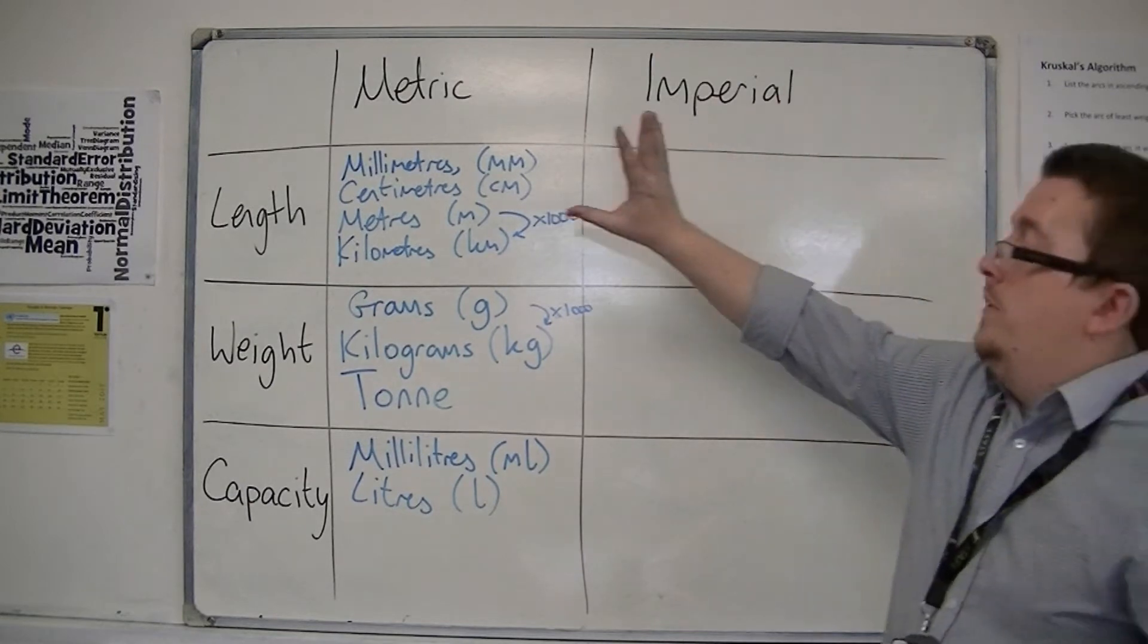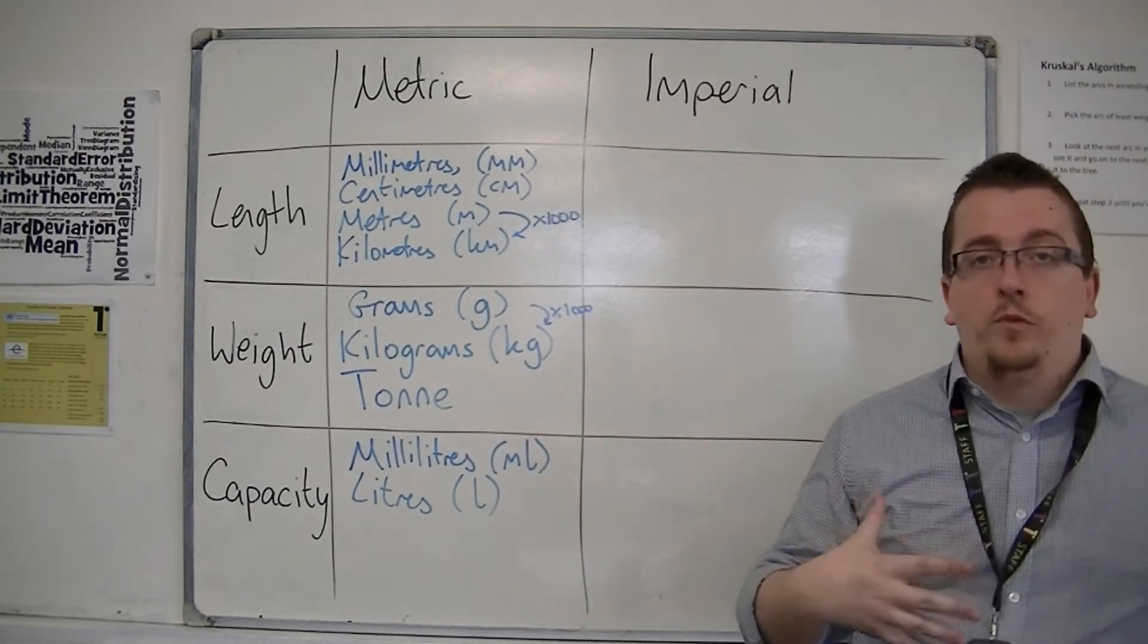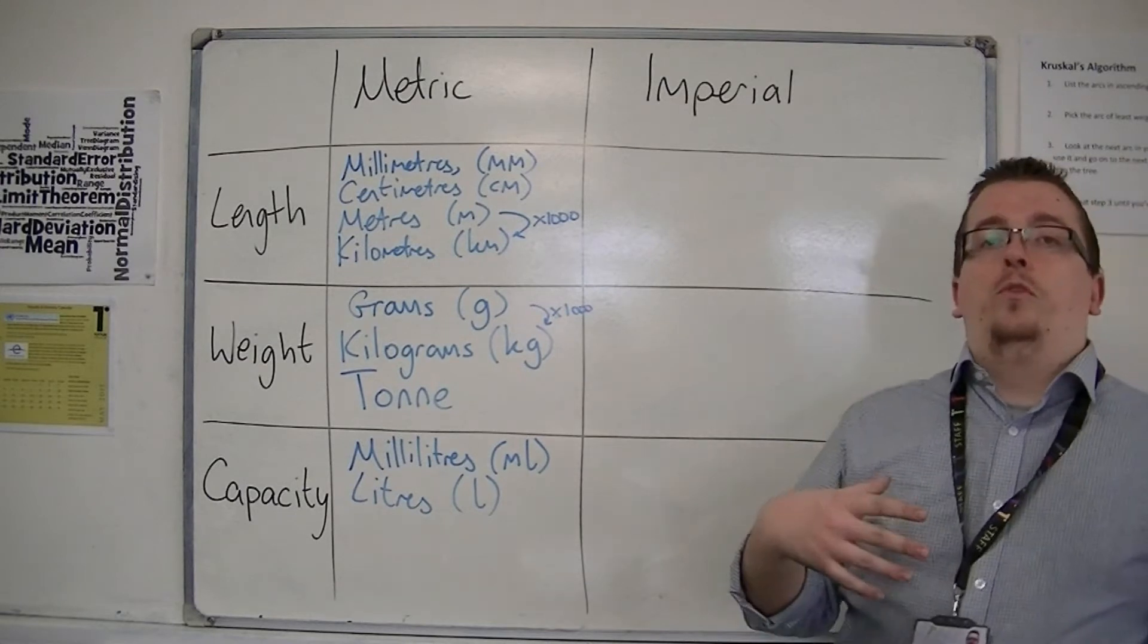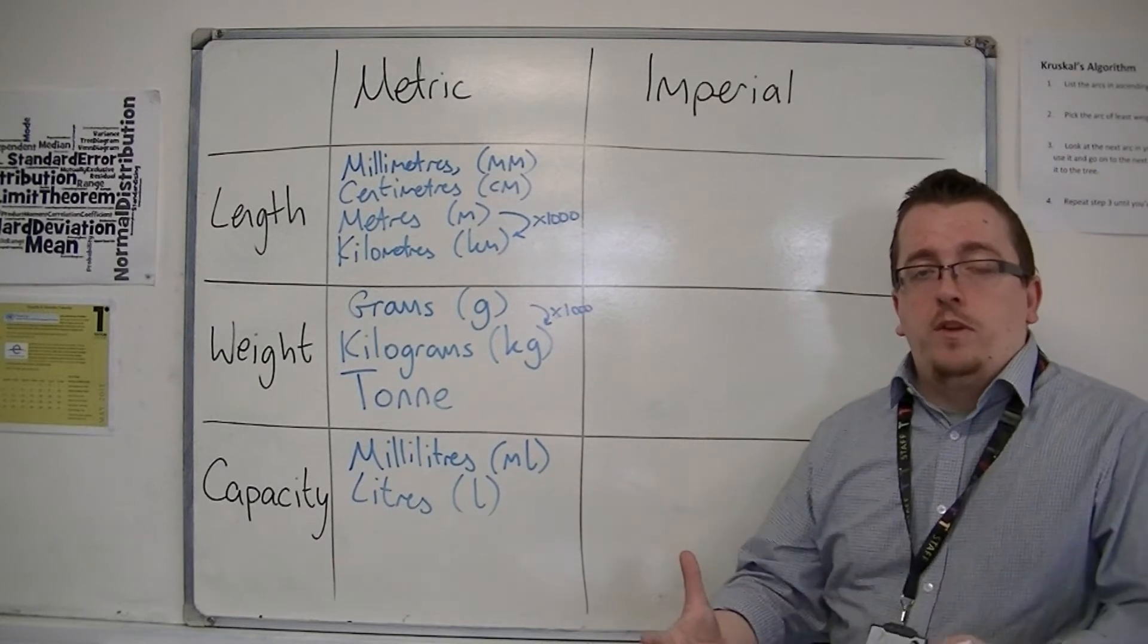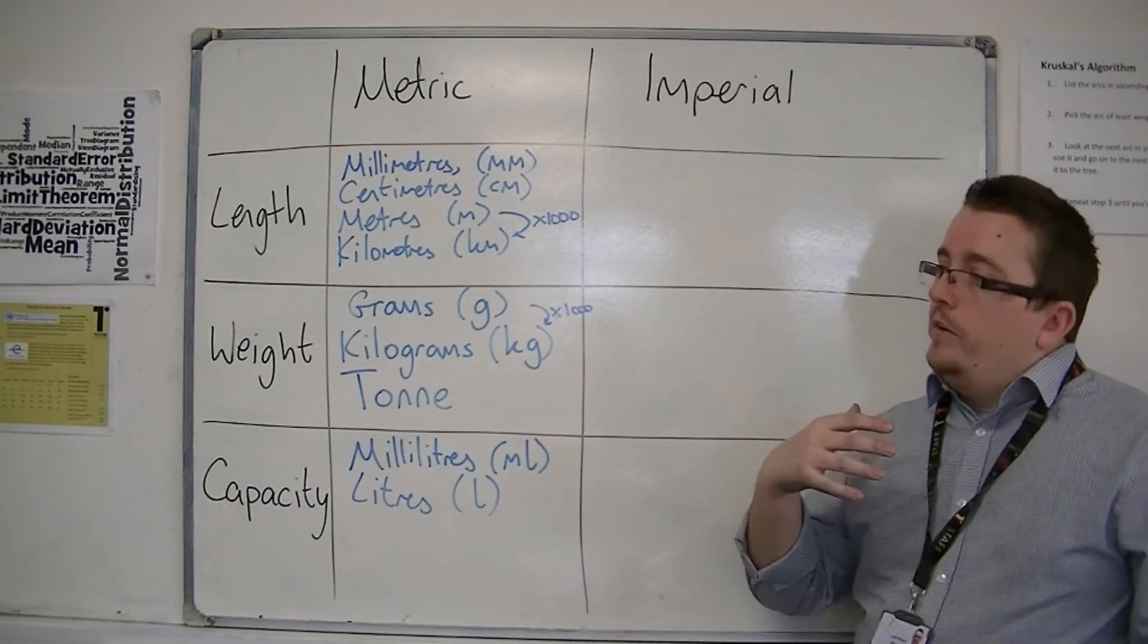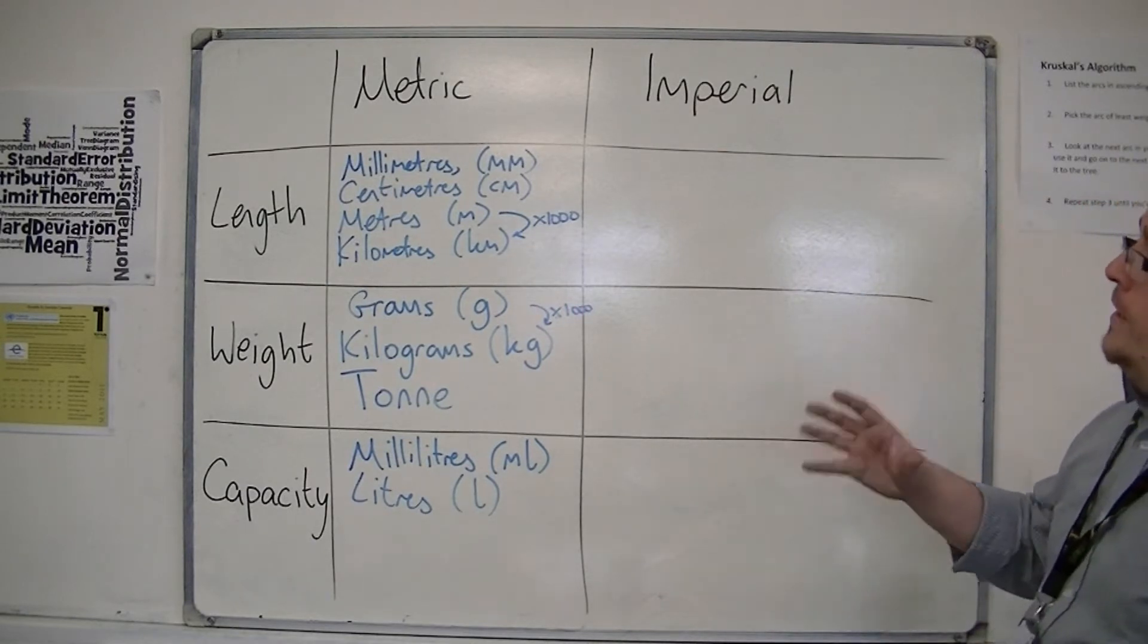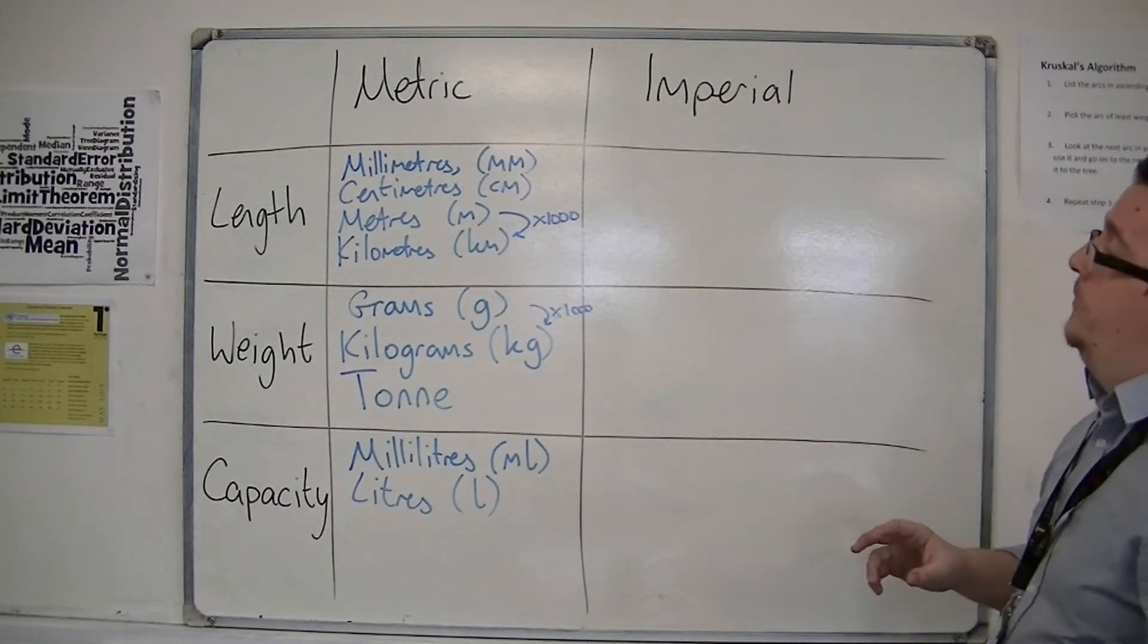So metric units, although we use them here in the UK, are primarily used in the US or in Europe. We measure on our roads in the UK in miles per hour, and that's what we're used to. But when you're in the US, you use kilometres an hour. So there is a key difference depending on where you are and which units are used.